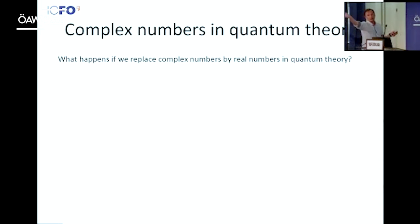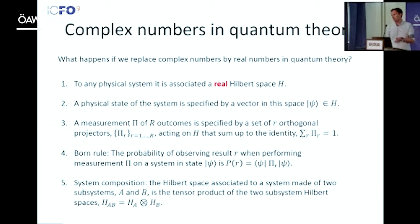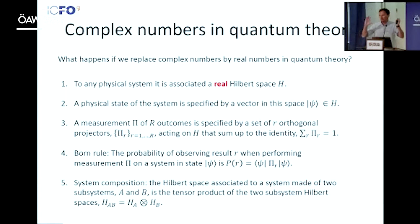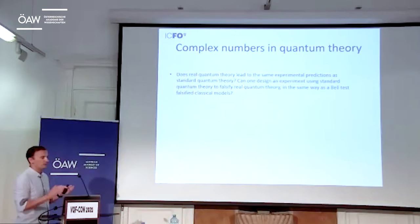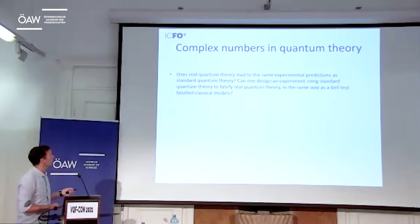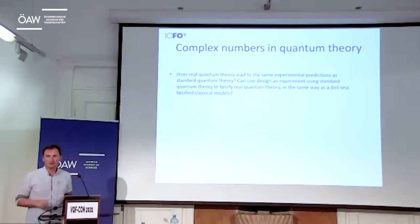What happens if I take the previous postulates and replace complex by real? These are the postulates — now I want real Hilbert spaces. Can I still explain experiments using this real quantum theory? In my talk, if I say real quantum theory, I refer to a theory framed in terms of objects defined on real Hilbert spaces. I want to know if I can replace complex numbers by real numbers in the postulates and have the resulting theory lead to the same experimental predictions. If it does, then I don't really need complex numbers.